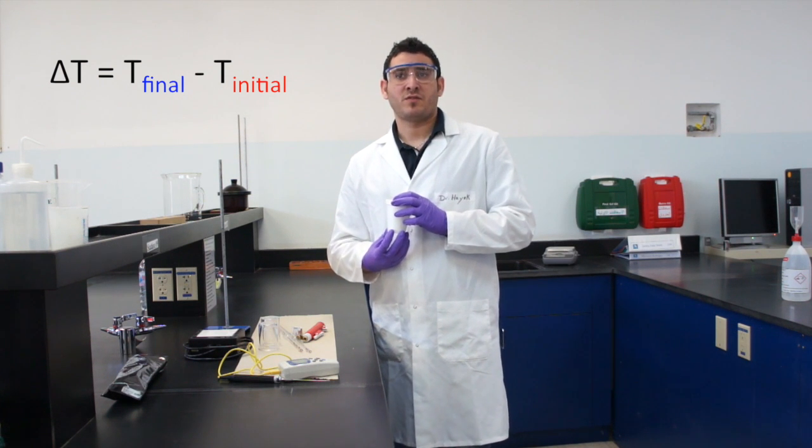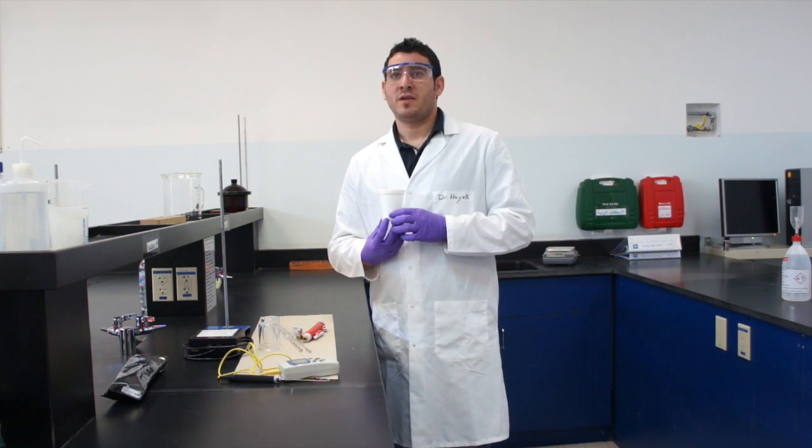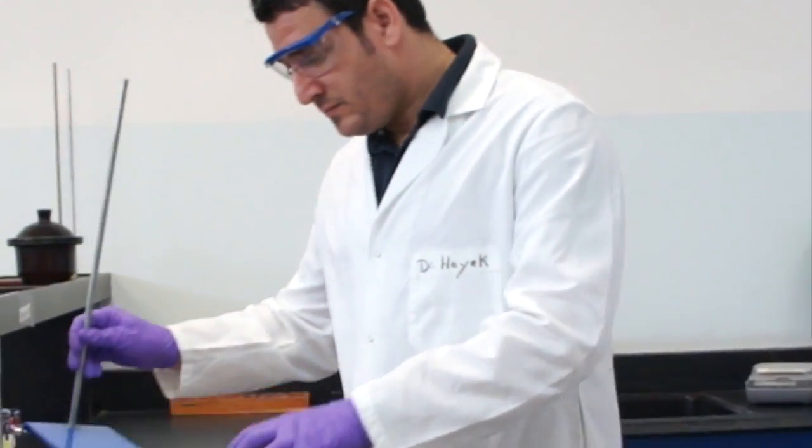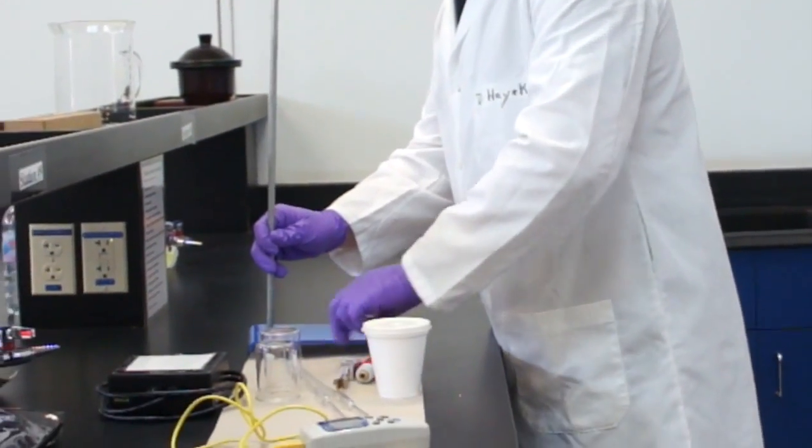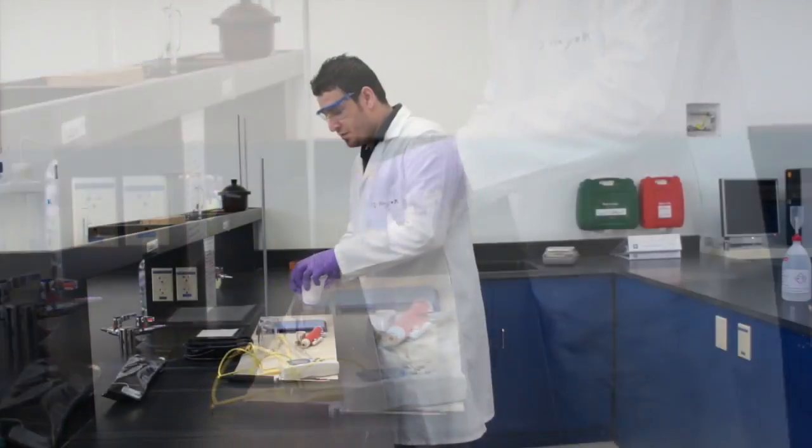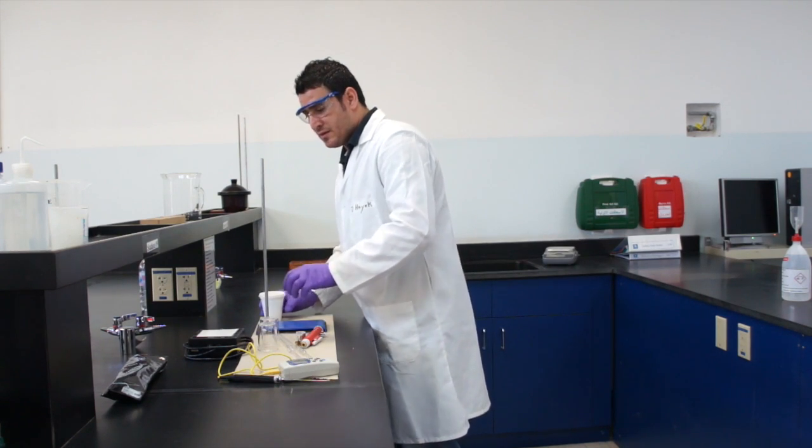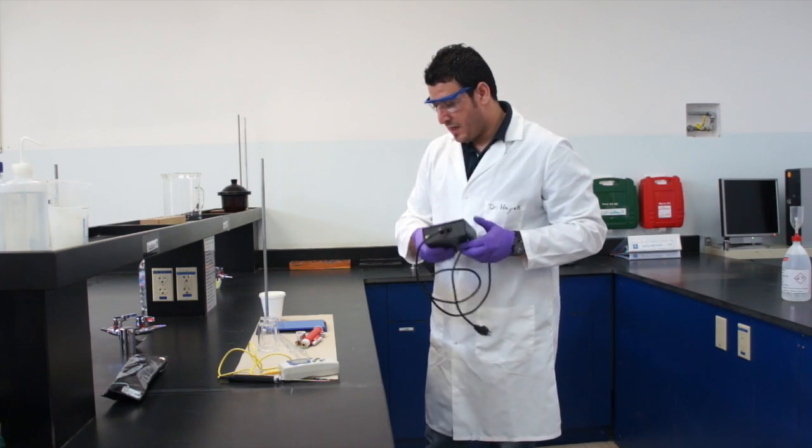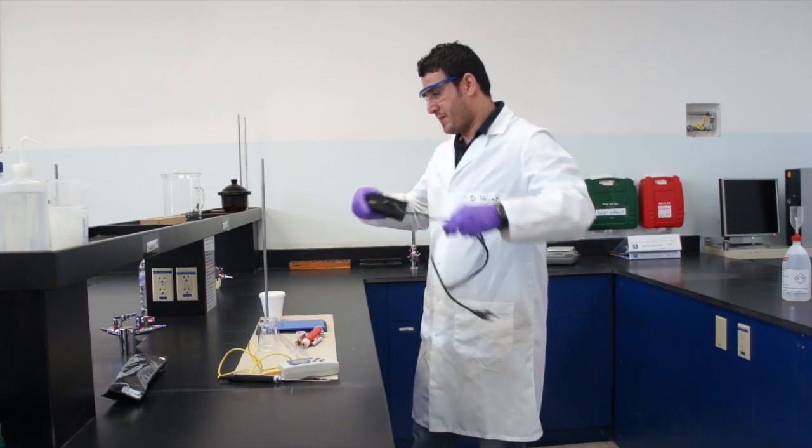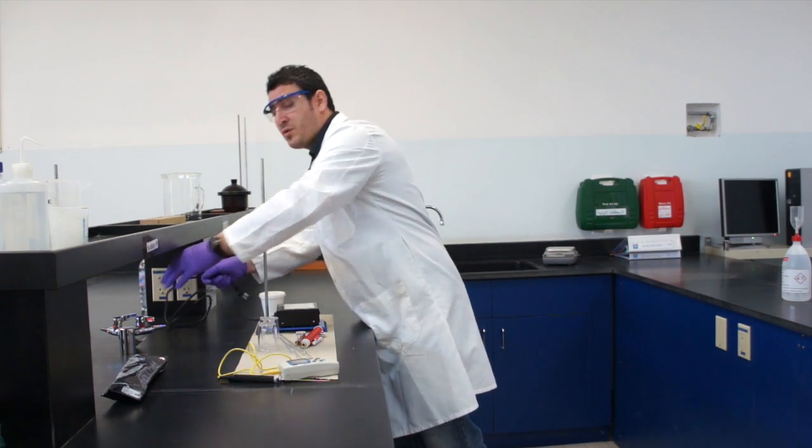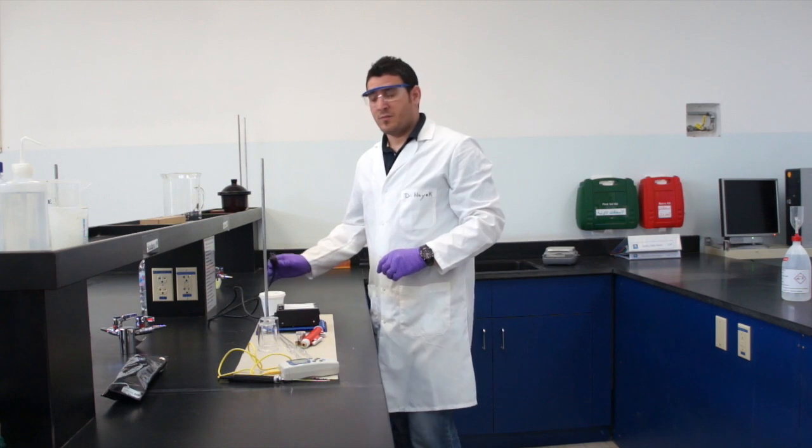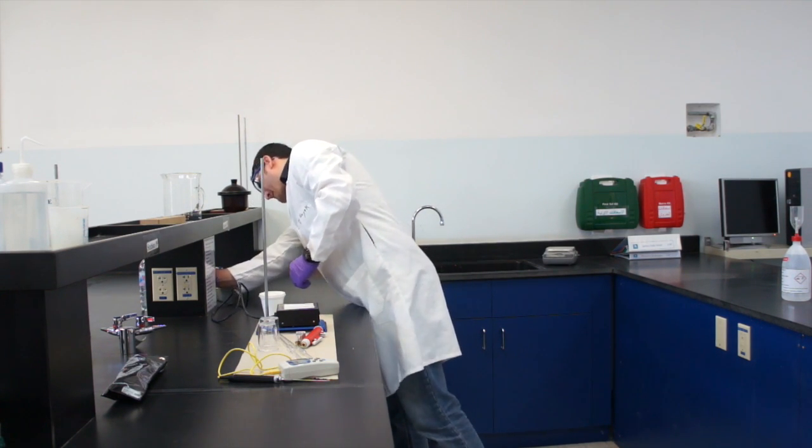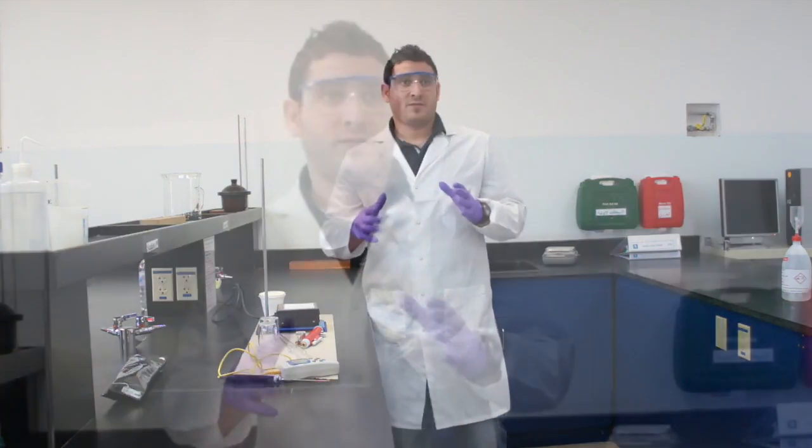What I have to determine experimentally is delta T. So all I need to do is measure the temperature of the solution before mixing and after mixing. I will put the base first—it doesn't matter which one we put first, but we will proceed by putting the base.